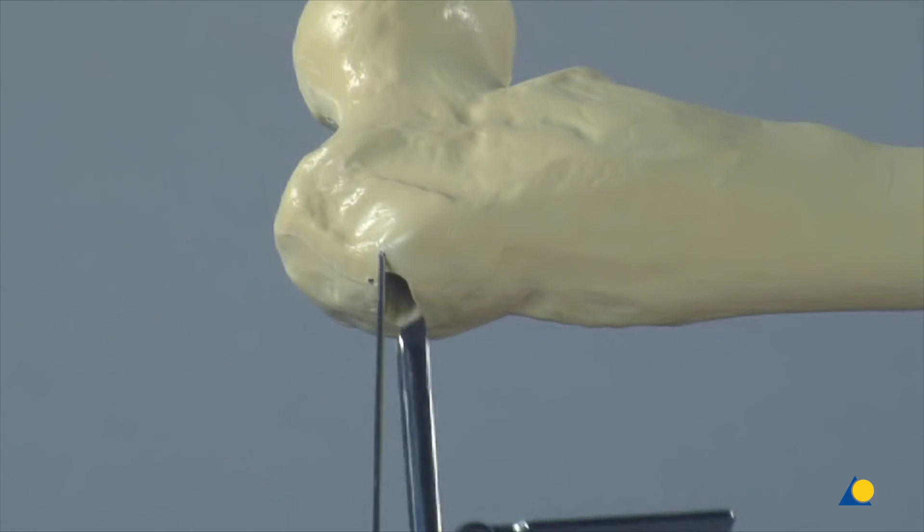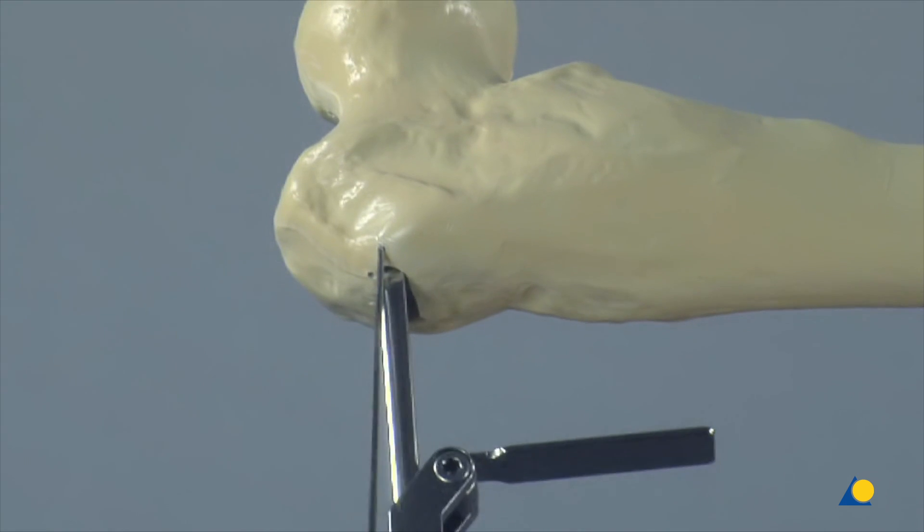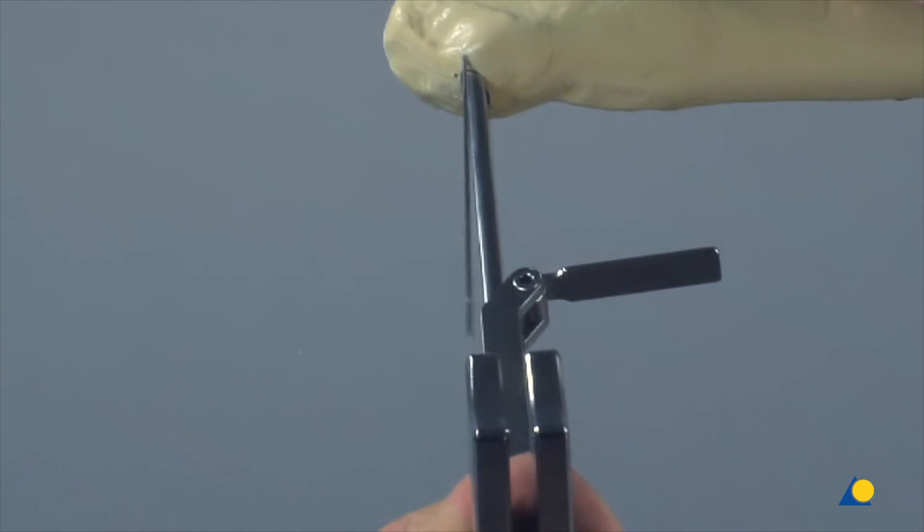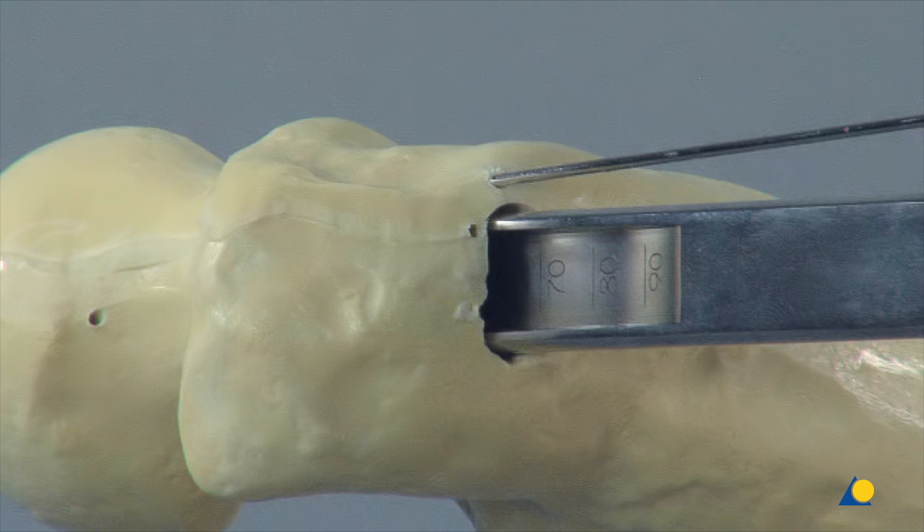The seating chisel is inserted to a depth of 60 millimetres with a hammer. The slotted hammer is used to control the rotation of the seating chisel.